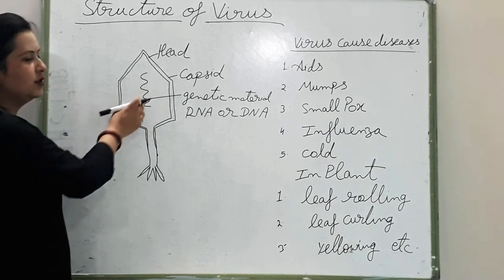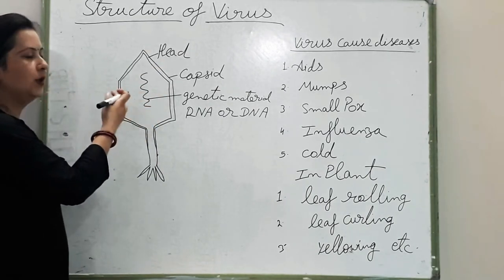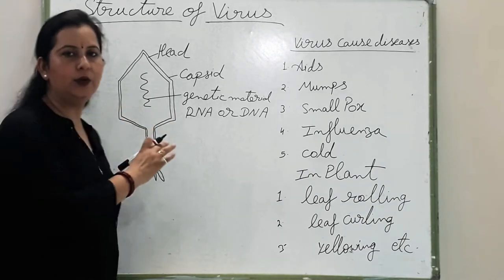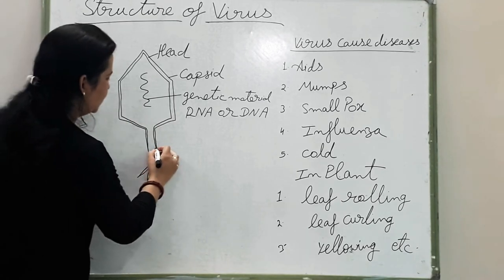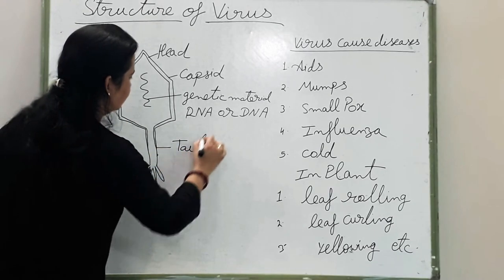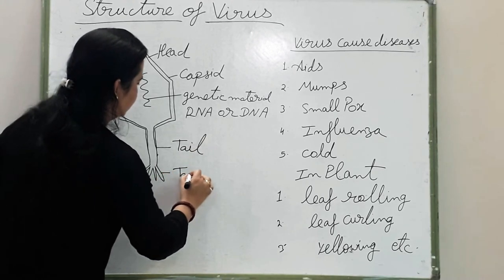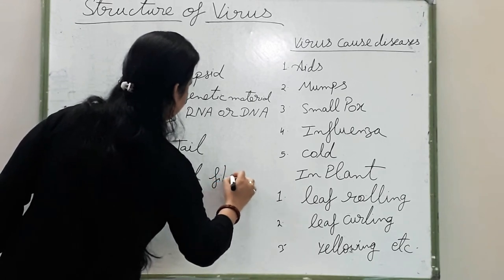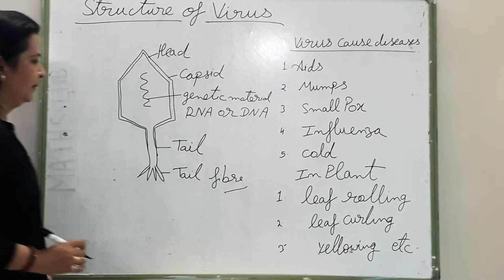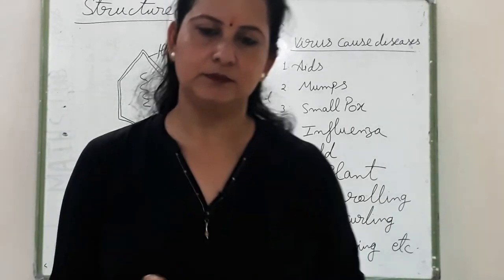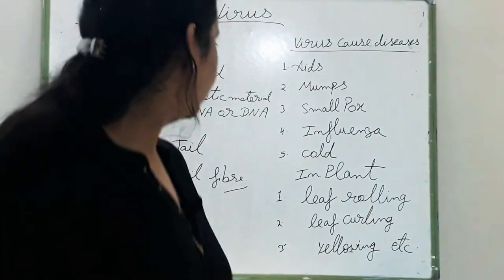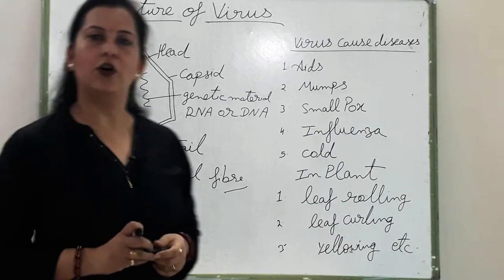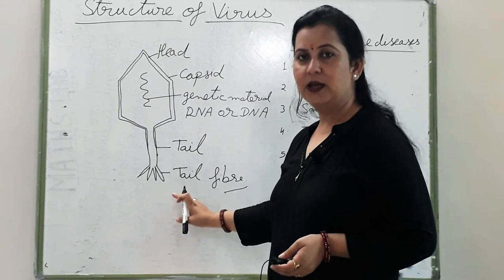Capsid hai yeh, aur iske andar genetic material paaya jata hai jo ki RNA bhi ho sakta hai aur DNA bhi ho sakta hai, but dono me se koye ek hi ho ga — ya to RNA ho ga ya phir DNA ho ga. Aur iske niche hai yeh tail, and this is tail fiber. This is the structure of the virus.